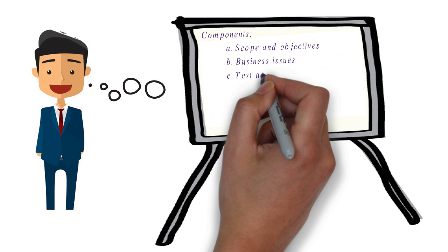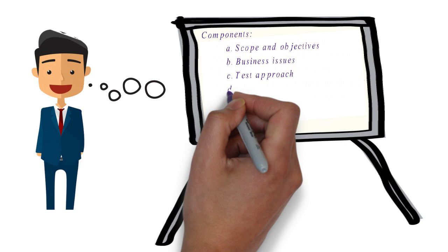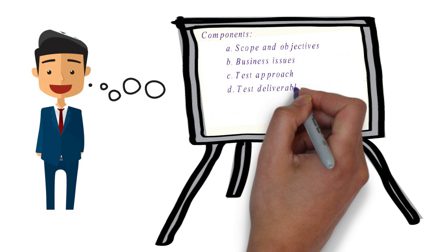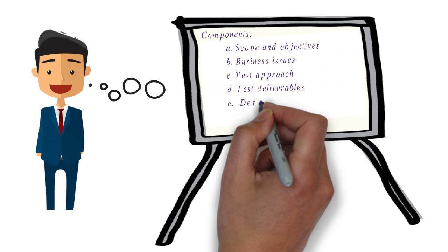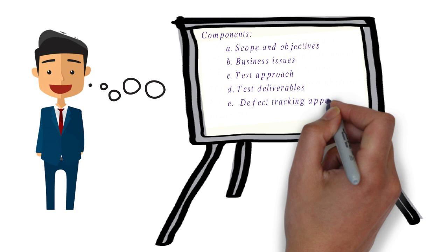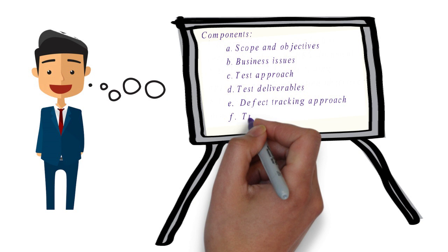The next component is test approach — what is the test approach for the project? The selection of test approach purely depends on the objective of the project. We will discuss this in the next section. The next component is test deliverables, which can be test logs, status reports, or test closure reports. All these components need to be delivered to the customer. The next component is defect tracking approach — the tools used to track defects will be captured here.